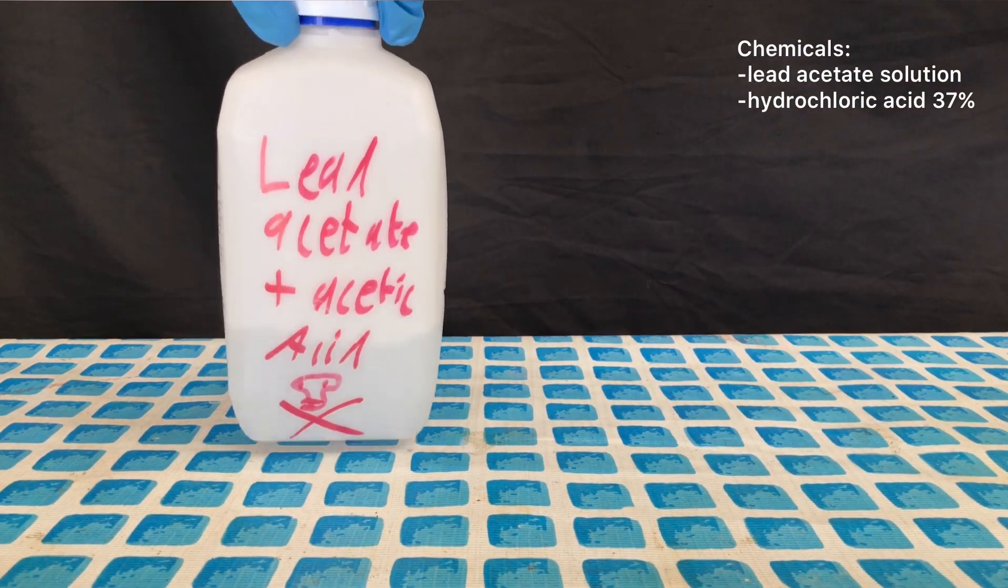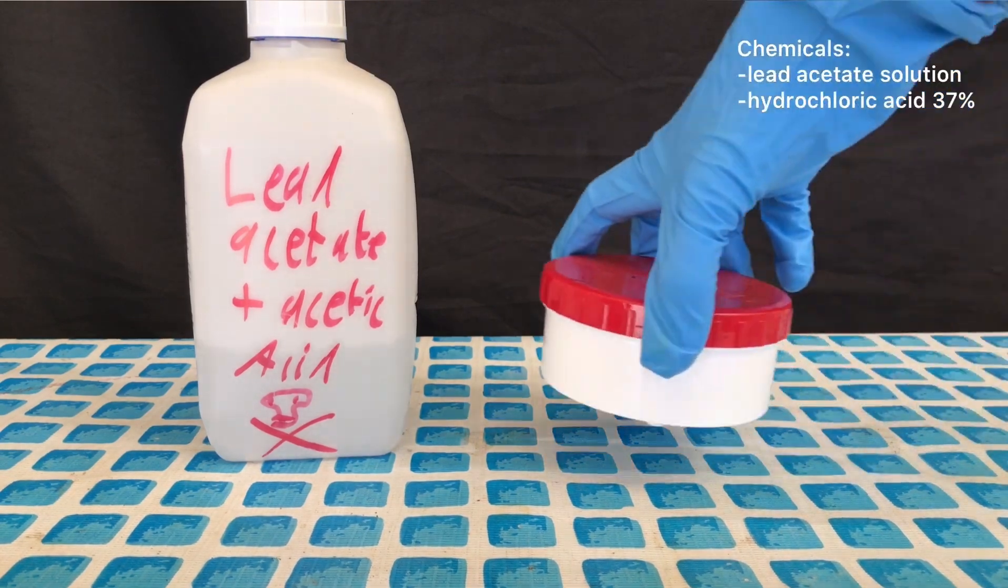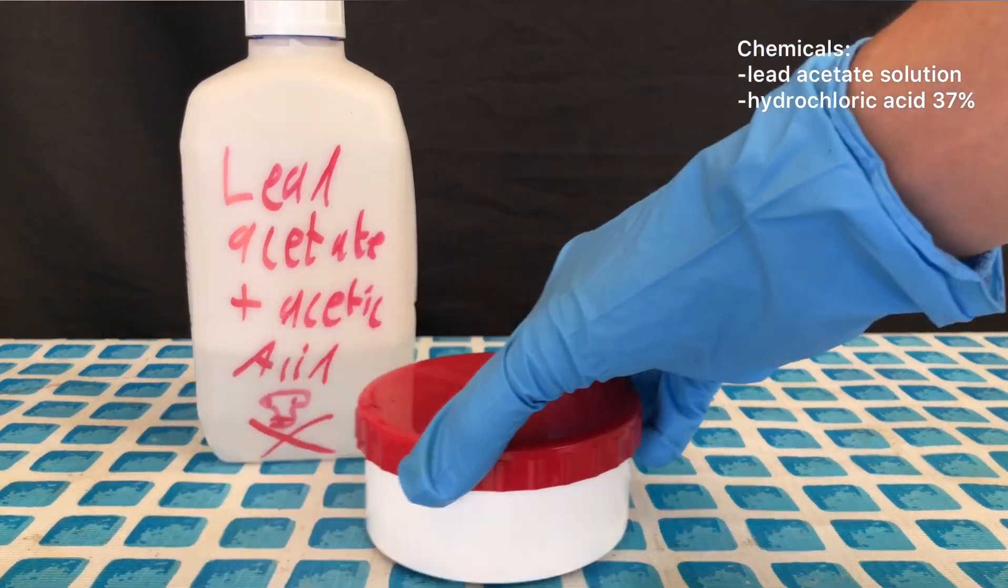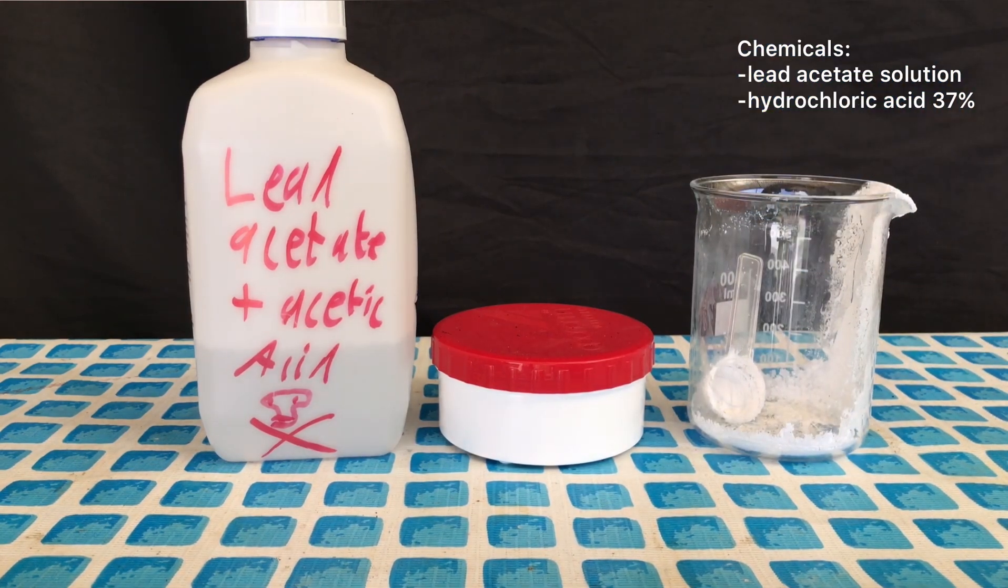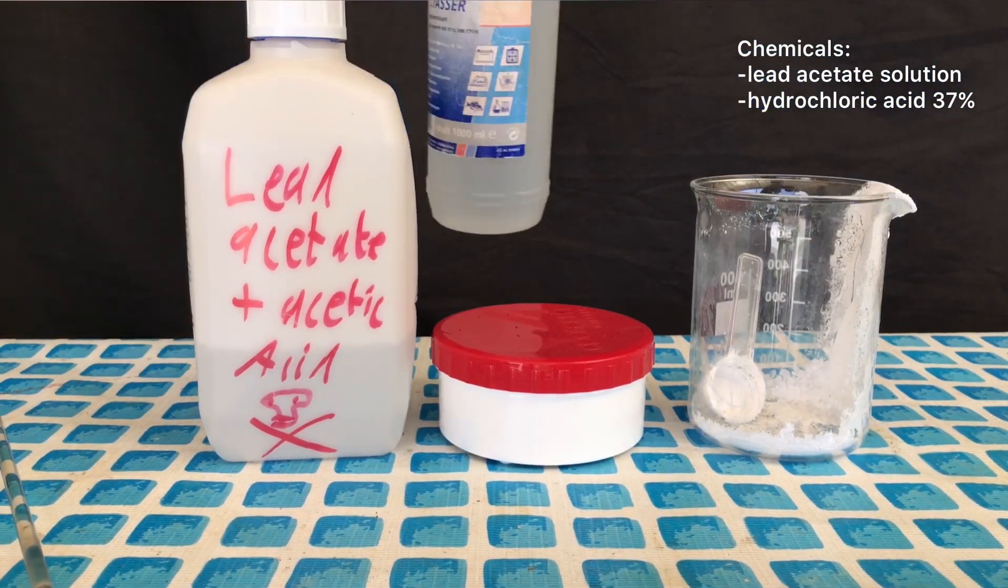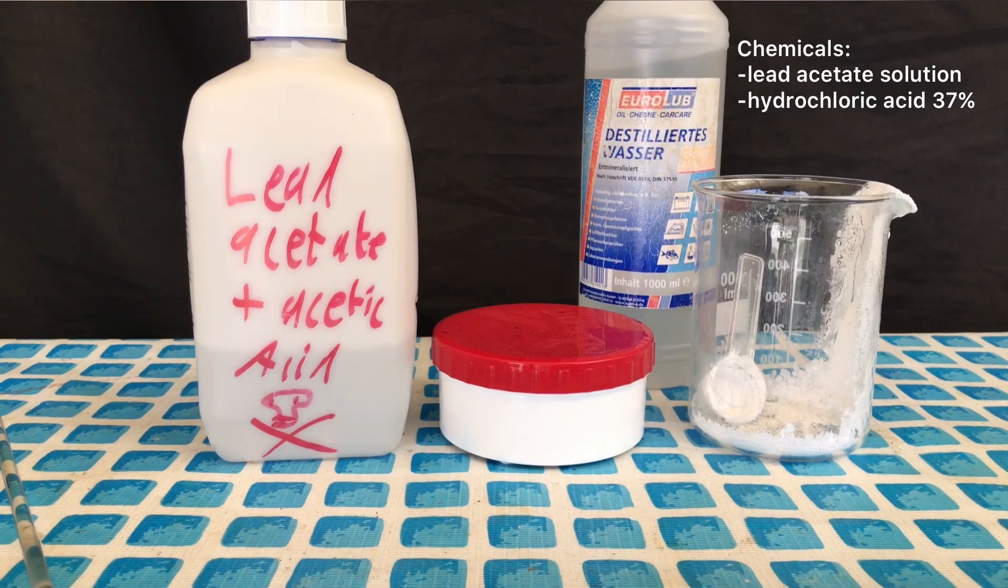Today we are going to make some lead(II) chloride from lead acetate and lead acetate solution. All of these here are basically waste material and I don't want to deal with it anymore. Therefore I am going to recover the lead in the form of a poorly soluble lead salt.